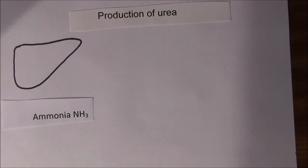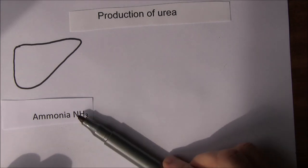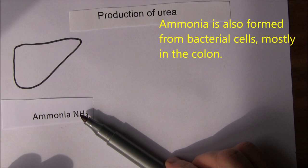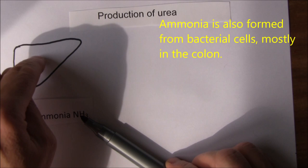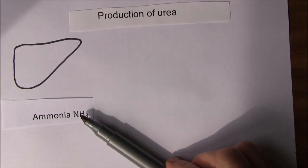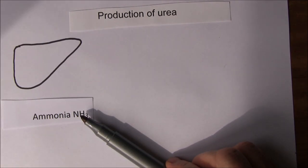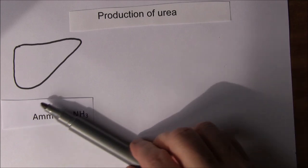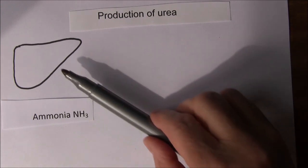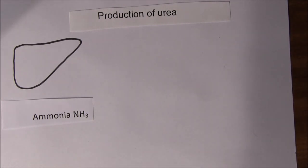And as well as that actually there's a lot of ammonia produced by the bacteria in the gastrointestinal tract. And as you remember the gastrointestinal tract drains directly to the liver via the hepatic portal vein. So quite a lot of gastrointestinal derived ammonia is going to arrive in the liver as well.